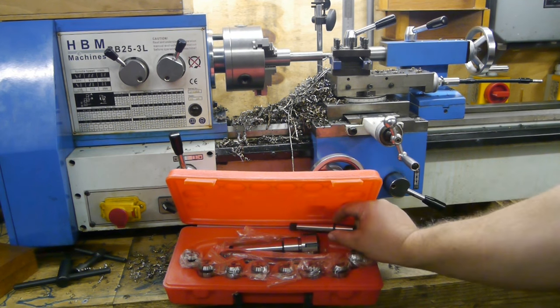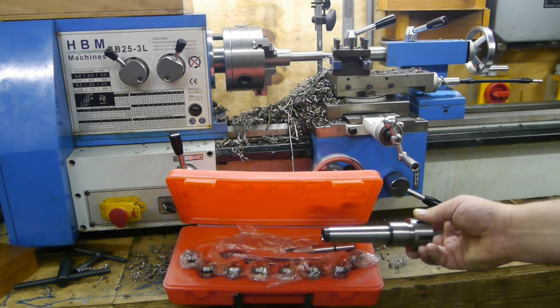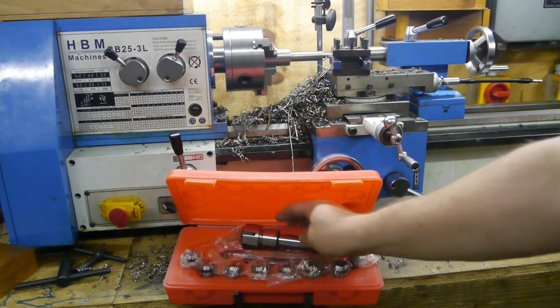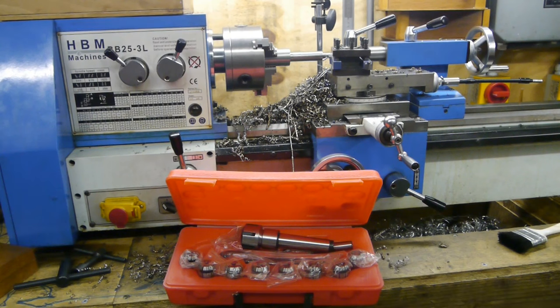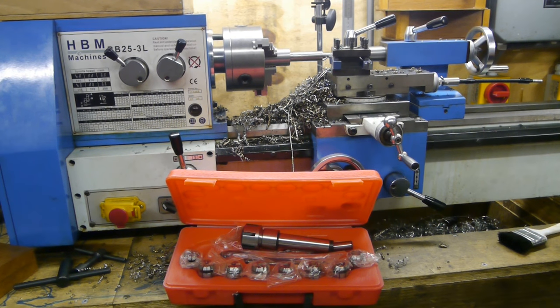But this is an MT3 holder and my tailstock is MT2. So I'm going to try and make an MT2 holder. I already roughed out a piece of stock metal and I'm getting ready to turn it further between centers.